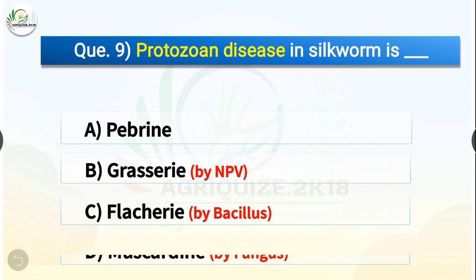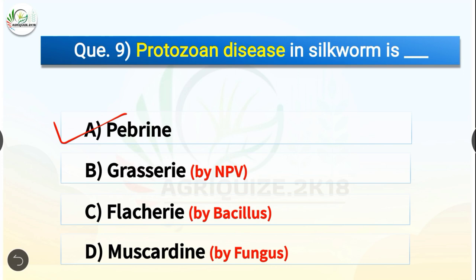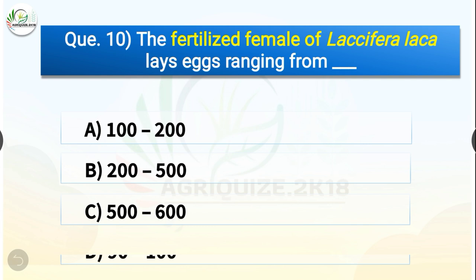Question number nine: Protozoan disease in silkworm is dash. The options are pebrine, grasserie, flacherie, or muscardine. The correct answer is option A — pebrine. Protozoan disease in silkworm is pebrine, whereas grasserie is caused by NPV, flacherie is caused by Bacillus, and muscardine is caused by a fungus.